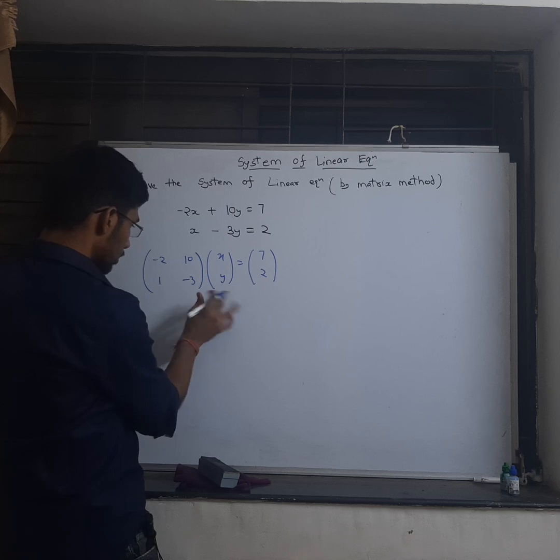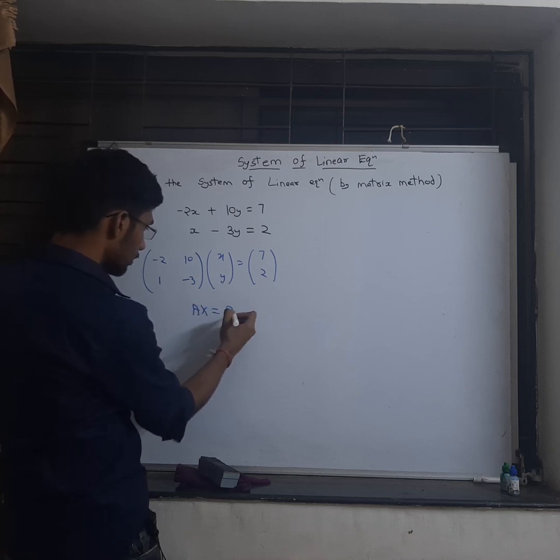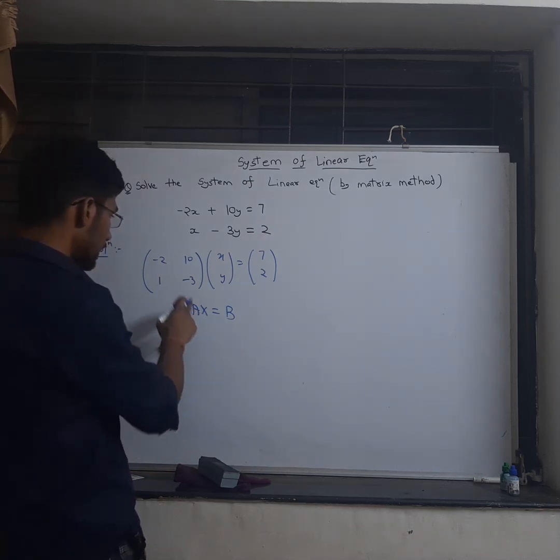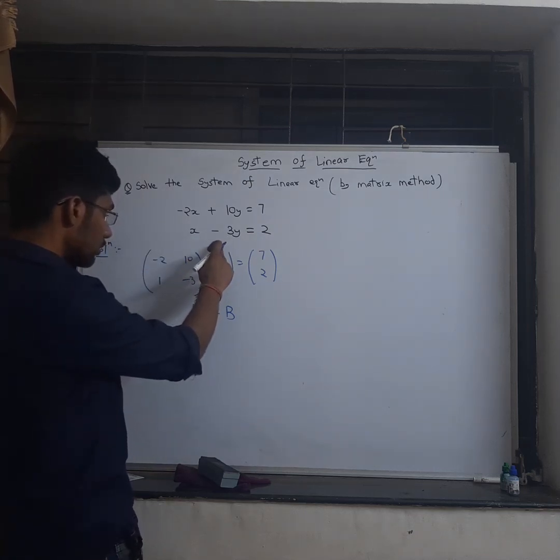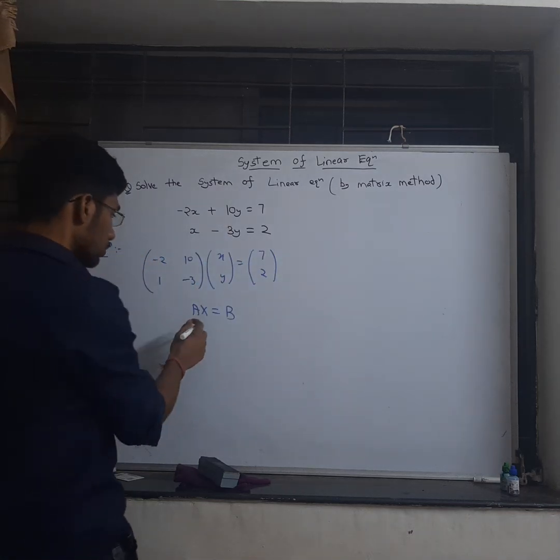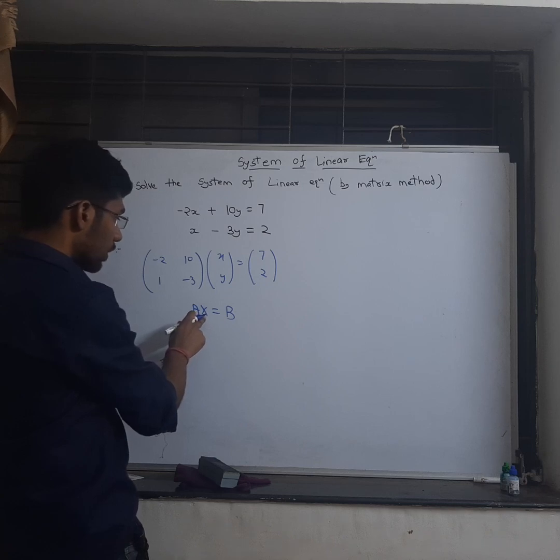So this can be represented as AX equals B, where my A is this, X is this and B is this. The purpose is to find the value of X, this column matrix, the variable column matrix.